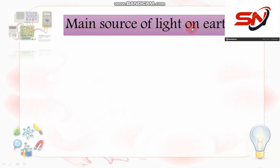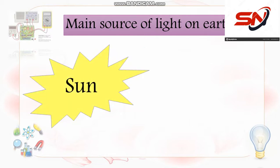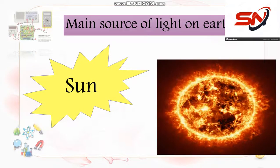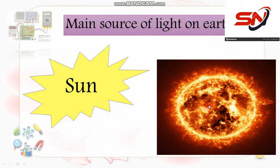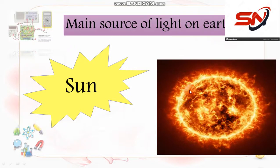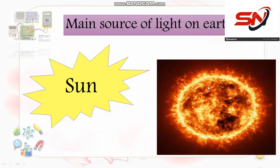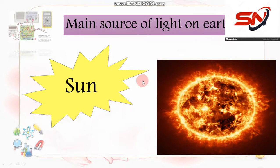Main source of light — مين المصدر الأساسي اللي بيدينا النور على الأرض؟ لو انت فكرت، مين أكثر أهمية وأهم حاجة بتدينا نور؟ أكيد هي الصن — the sun هو أهم source of light on earth.